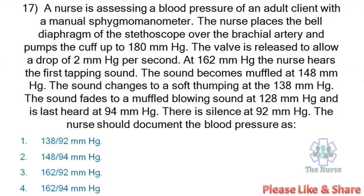Next question: A nurse is assessing blood pressure of an adult client with a manual sphygmomanometer. The cuff is pumped to 180 mmHg, and the valve is released at 2 mmHg per second. The first tapping sound is heard at 162 mmHg; sound becomes muffled at 148 mmHg; changes to soft thumping at 138 mmHg; fades to muffled blowing at 128 mmHg; last heard at 94 mmHg; silence at 92 mmHg. The nurse should document the blood pressure as: 138/92, 148/94, 162/92, or 162/94. Correct answer: 162/94.